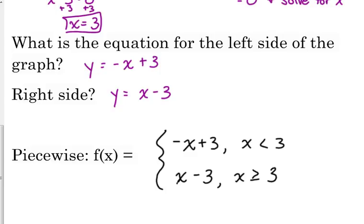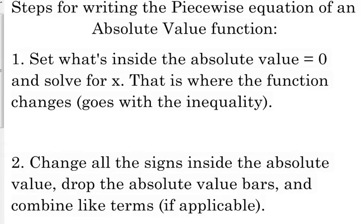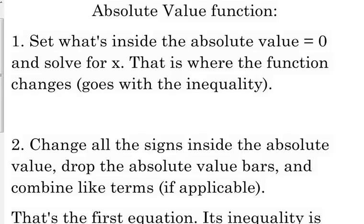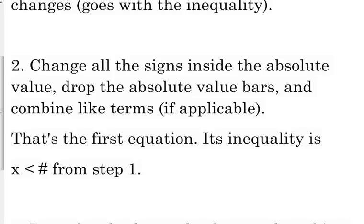When you flip your paper over, you'll see the steps for writing the piecewise equation of an absolute value function. Step one: to find where the function changes — the number that goes with the inequality — set what's inside the absolute value equal to 0 and solve for x. You don't always have to draw the graph. Change all the signs inside the absolute value, drop the absolute value bars (or change them to parentheses if you need to distribute), and combine like terms if applicable.